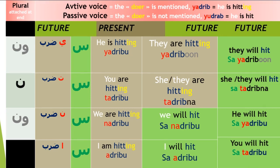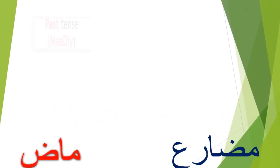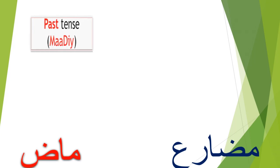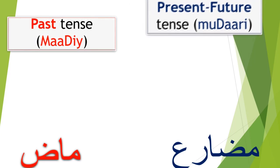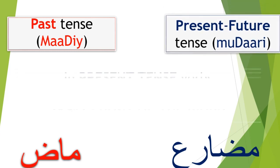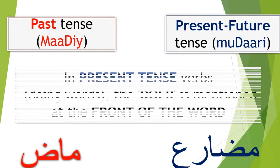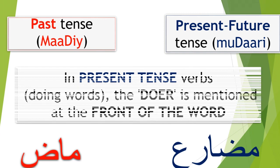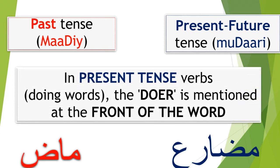In Arabic there are only two tenses. The past tense is called ماضي — something which has no doubt already happened. The other is the present-future tense, called مضارع — something which has not passed yet. In present tense verbs, the door is mentioned at the front of the word, unlike past tense words where the door is mentioned at the end.